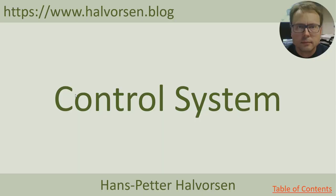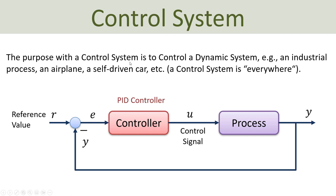Let's start with our basic control system. The purpose of a control system is to control a dynamic system - it could be an industrial process, an airplane, a self-driven car, etc. Basically control systems today are everywhere in industry, in different cars, in heat systems - basically everywhere in the world today. Here you see a sketch of a basic control system, where the basic purpose is to control a given process such as an industrial process.